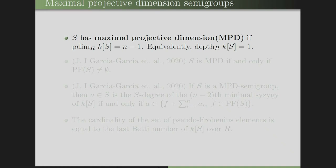We define maximal projective dimension semi-groups. A semi-group S has maximal projective dimension (MPD) if its projective dimension is N minus 1, where N is the number of generators — equivalently, depth of K[S] is 1. Garcia et al. in 2020 proved that S is MPD if and only if the set of pseudo-Frobenius elements is non-empty.